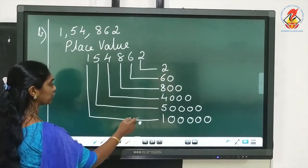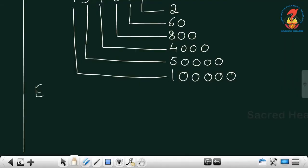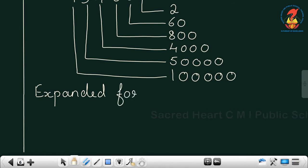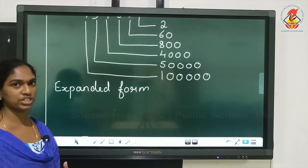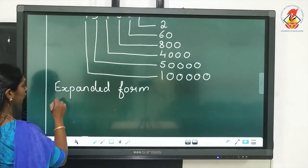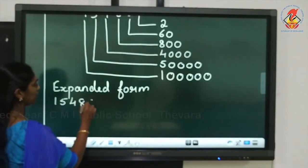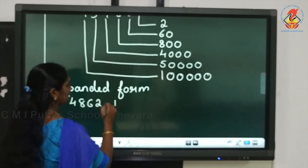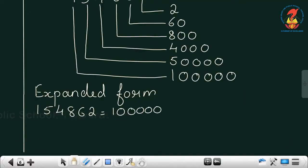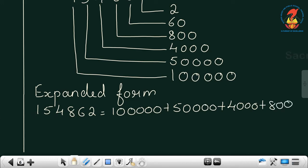Now, the expanded form of 1,54,862 is: 1,00,000 + 50,000 + 4,000 + 800 + 60 + 2.